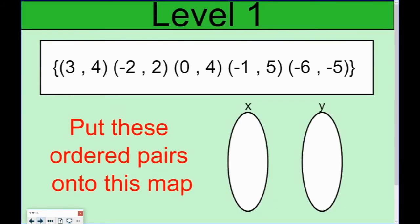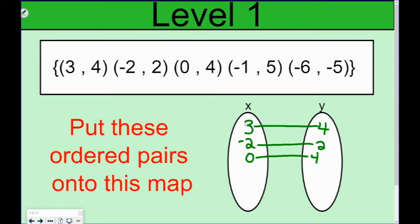We talked about mapping. Mapping just says we're going to put our ordered pairs down and draw a line between them. So 3 goes with 4, negative 2 goes with 2, 0 goes with 4, negative 1 goes with 5, and negative 6 goes with negative 5.